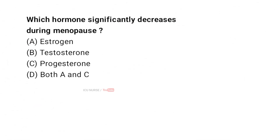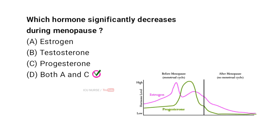Which hormone significantly decreases during menopause? A. Estrogen. B. Testosterone. C. Progesterone. D. Both A and C. And the correct answer is D. Both A and C. During menopause, both estrogen and progesterone levels decline, which leads to the symptoms associated with menopause.